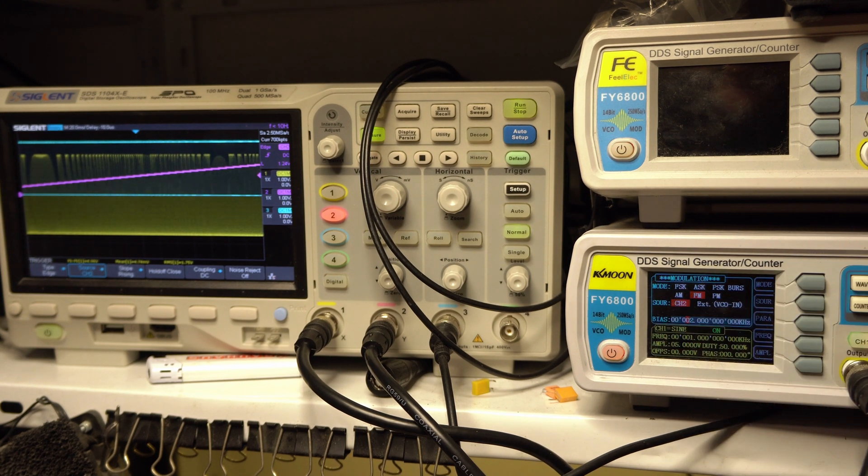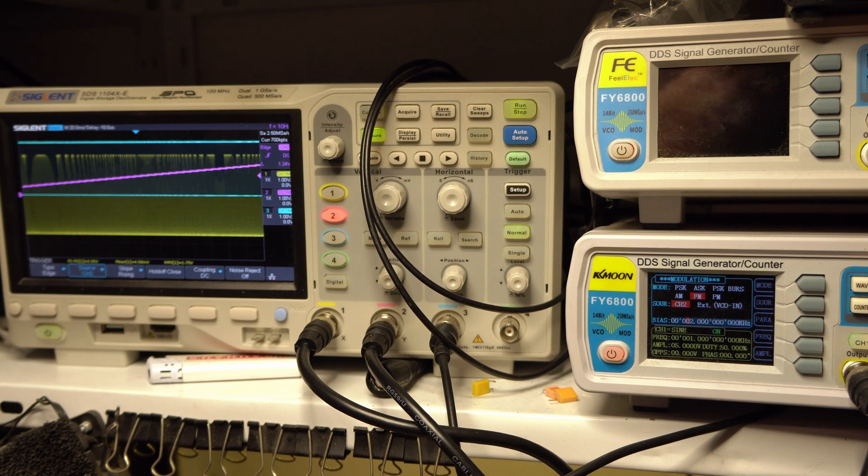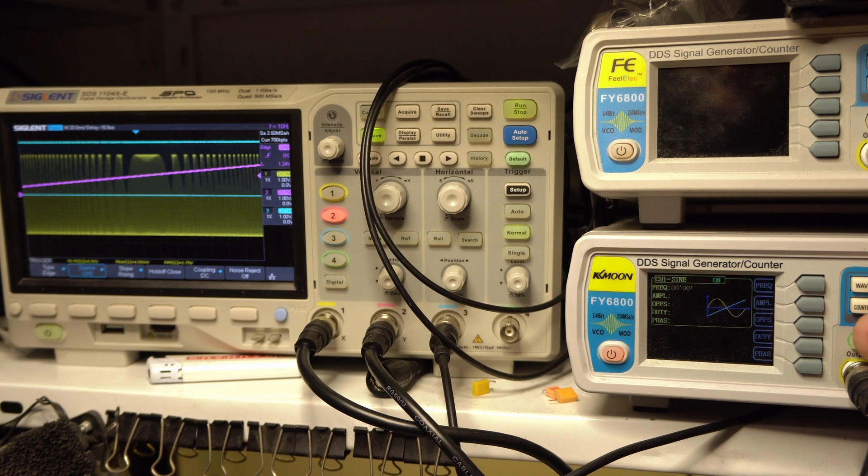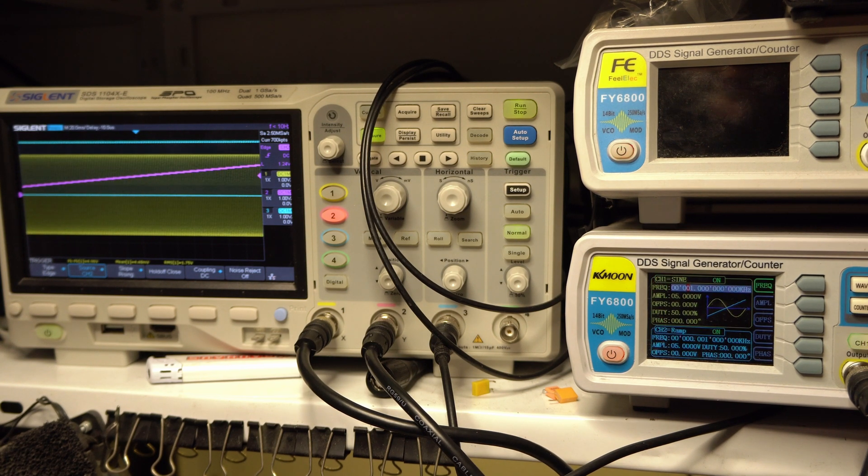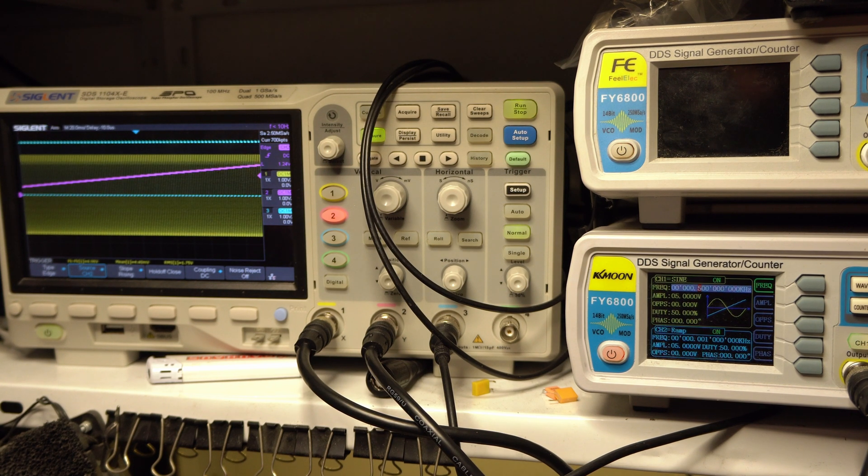Now we select, we enter our modulation range - let's say one kilohertz. But first we have to set channel one to half that, so 500 megahertz. Now the center point is 500 megahertz and it modulates back and forth 500 megahertz in each direction.